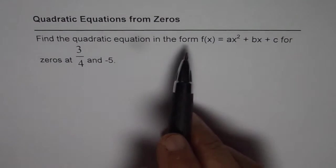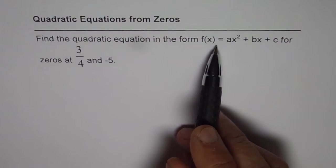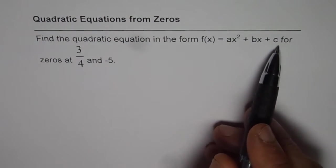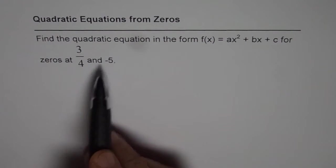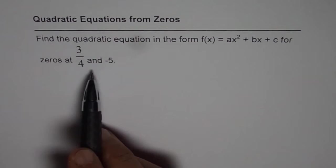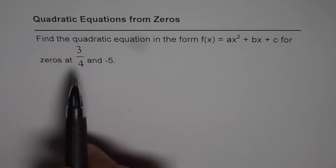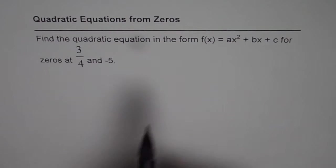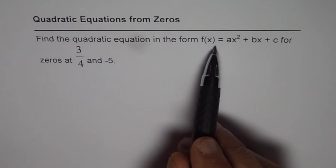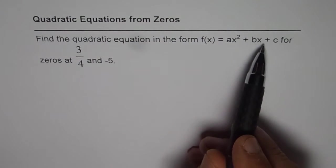Find the quadratic equation in the form f(x) = ax² + bx + c for zeros at 3/4 and -5. In this case we are given two zeros: one is 3/4, the other is -5, and we have to get an equation of the form ax² + bx + c.